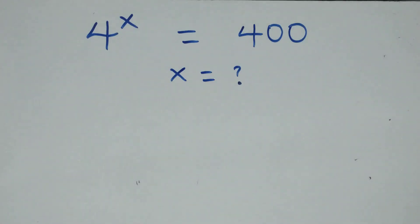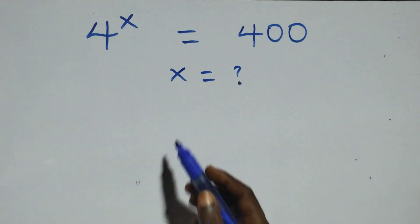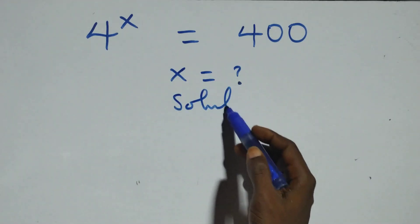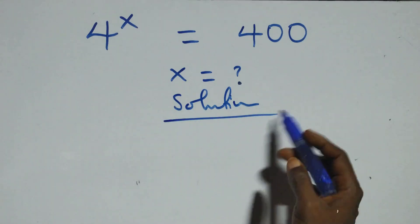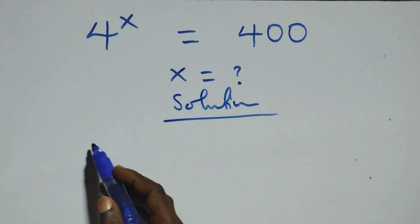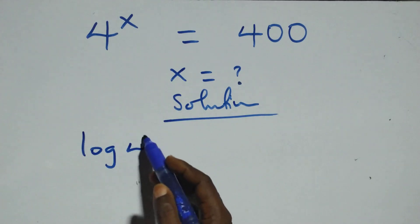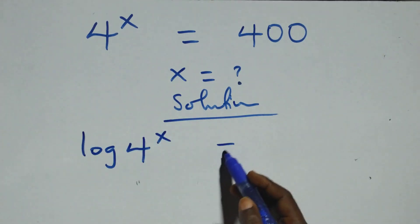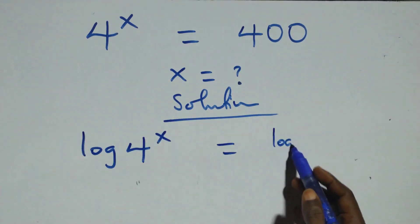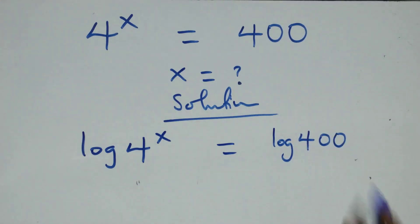Hello, you're welcome. How to solve this nice exponential equation. We take the log on both sides: log of 4 raised to power x equals log of 4 raised to the value on this side.